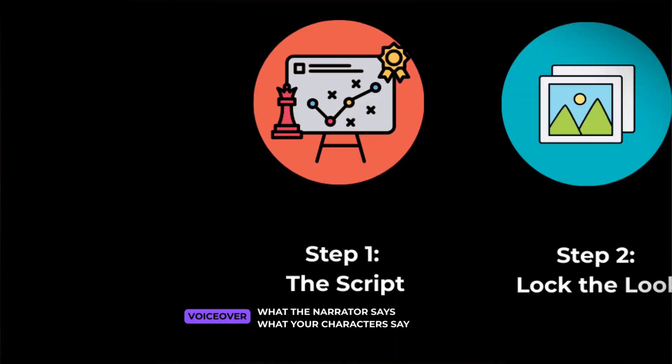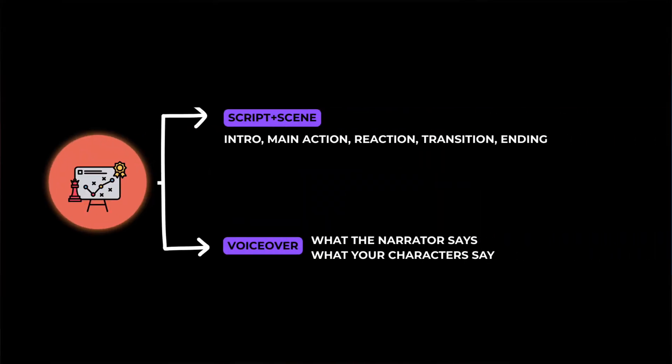You also decide the narration for each scene. That means you're not just planning visuals — you're writing the exact voiceover beats too: what the narrator says, what your characters say if they speak, and the tone you want. Once the scene plan and voiceover lines are locked, everything else becomes way easier, because you're generating with a clear blueprint instead of guessing.